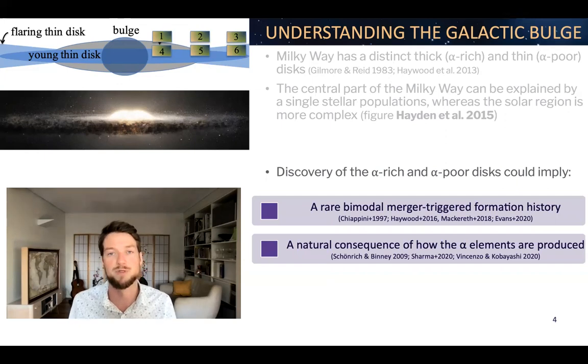The alternative to this alpha-rich and alpha-poor disk is that it's actually a natural consequence of how the alpha elements are produced. It is the delay time between Type II supernova and Type Ia supernova that causes this bimodality. And if you combine this with radial migration, you can actually explain the alpha to iron versus metallicity diagram in our solar neighborhood rather well.